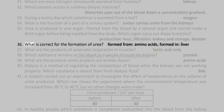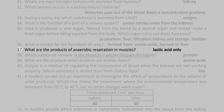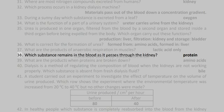36. What is correct for the formation of urea? Formed from amino acids, formed in liver. 37. What are the products of anaerobic respiration in muscles? Lactic acid only.